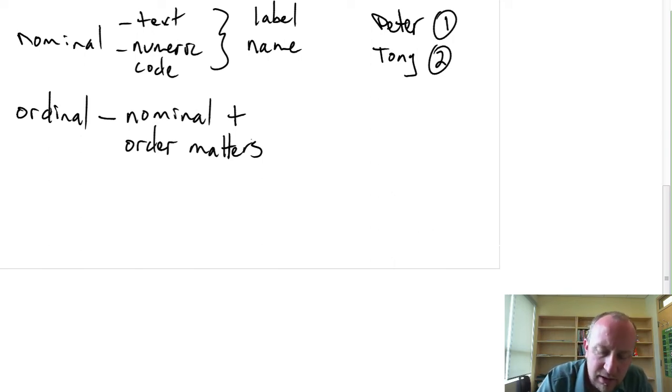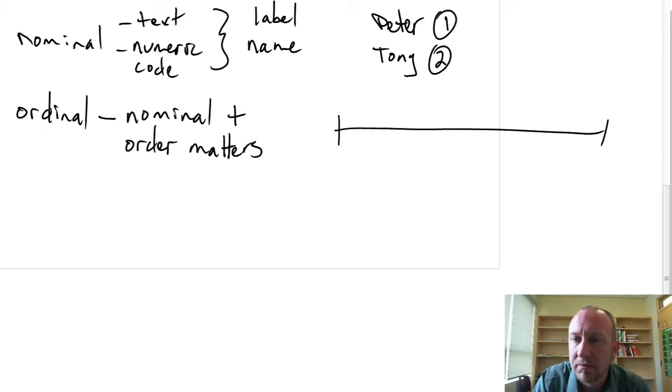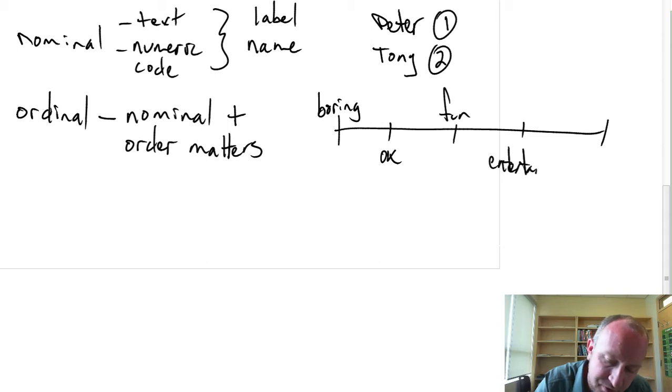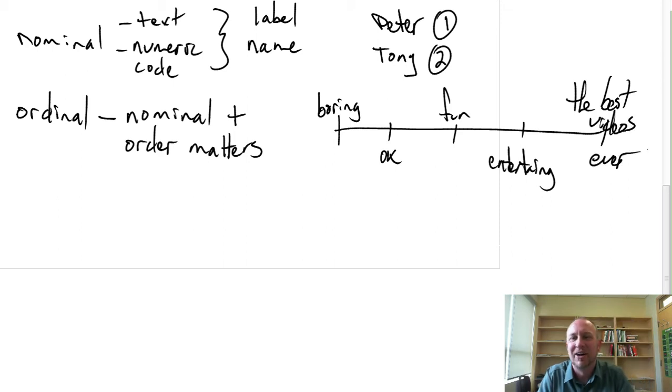So let's say, for example, you're asked to evaluate the entertainment value of these StatisticsWorkbook.com videos. So maybe it's boring, hopefully it's not too boring, but maybe it's okay, maybe it's fun, maybe it's entertaining, maybe it's the best videos ever. Optimistic. So this gives us a scale, it's a non-numeric scale, but I can easily code this. This can be one, two, three, four, and five. I can assign a numeric code for it.